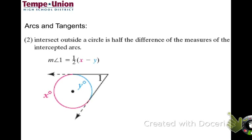Sometimes you'll have an angle that's outside the circle — a circumscribed angle. To find the measure of that angle, you take the outside arc, subtract the inside arc, then divide by two, and that gives you the angle measure.